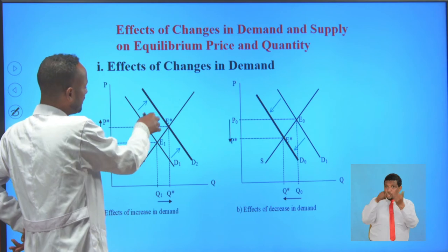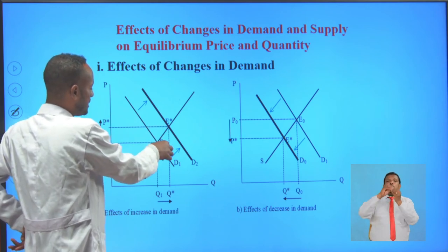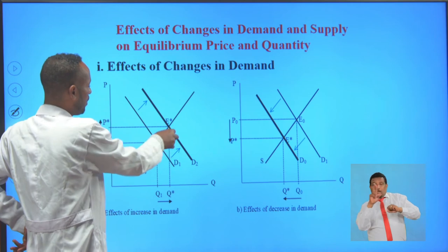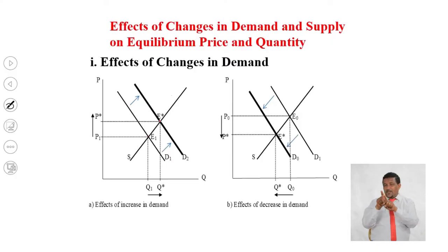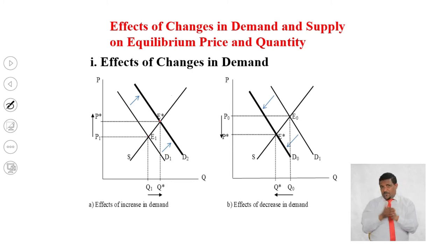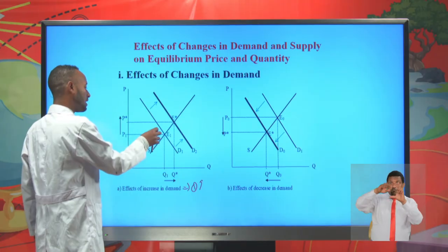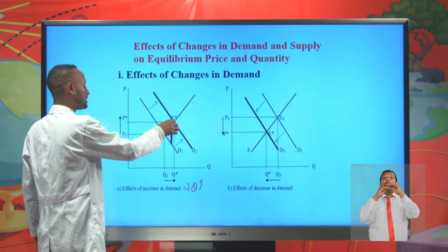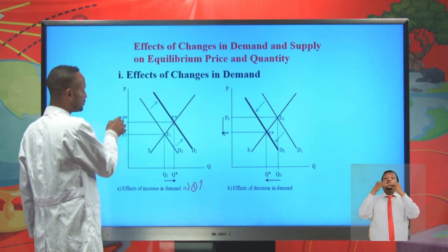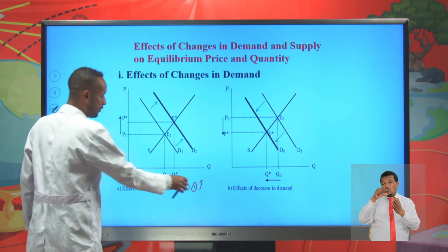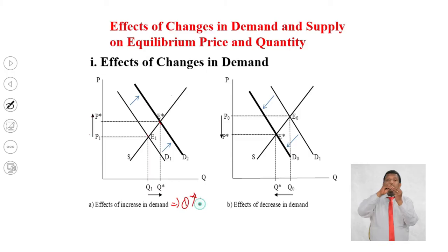As a result of an increase in demand, we shift the demand curve to the right. The equilibrium point shifts from E₀ to E*, the equilibrium quantity shifts from Q1 to Q*, and the equilibrium price also shifts from P₀ to P*. So with an increase in demand, both the equilibrium price and quantity will also increase.